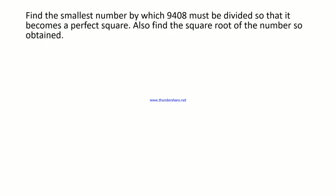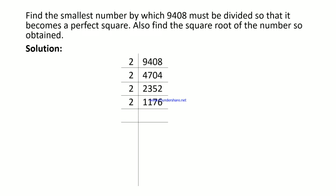Find the smallest number by which 9408 must be divided so that it becomes a perfect square. Also find the square root of the number so obtained. For that, first we have to do the prime factorization of 9408. The prime factorization of 9408 is equal to 2 × 2 × 2 × 2 × 2 × 7 × 7 × 3.